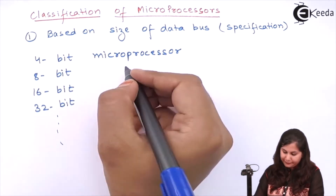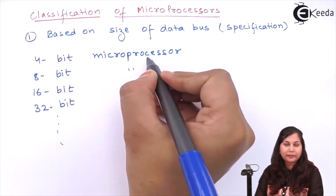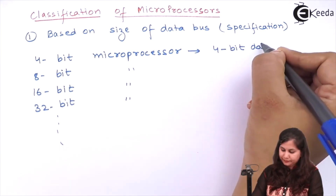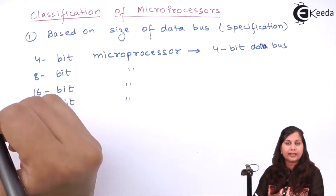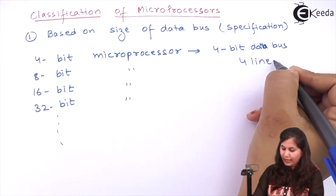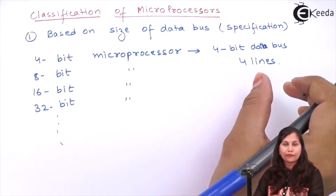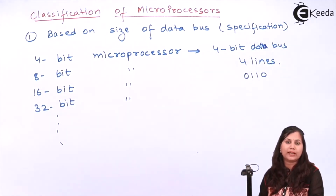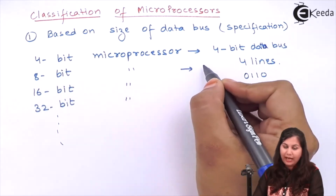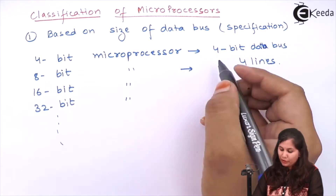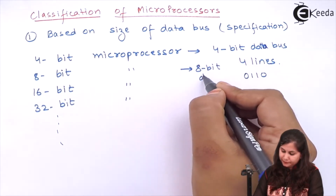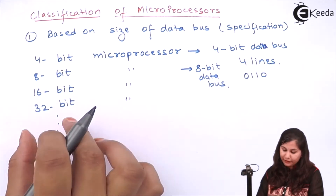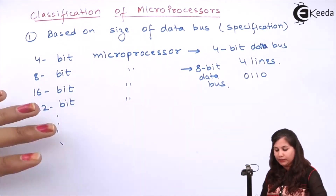A 4-bit microprocessor has a 4-bit data bus, meaning it has four lines for handling data. An 8-bit microprocessor has an 8-bit data bus with 8 lines. Similarly, a 16-bit microprocessor has a 16-bit data bus and a 32-bit microprocessor has a 32-bit data bus. So on the basis of the size of the data bus, microprocessors are classified into various categories.